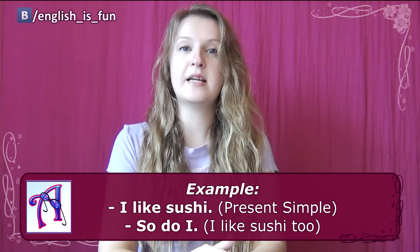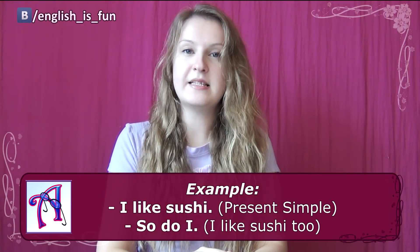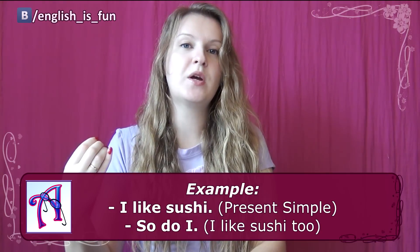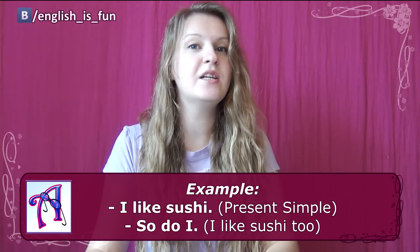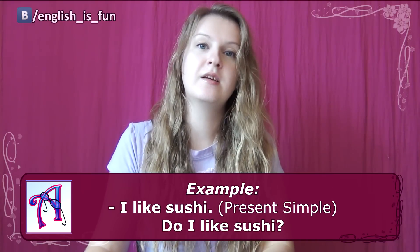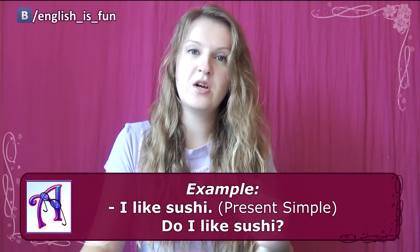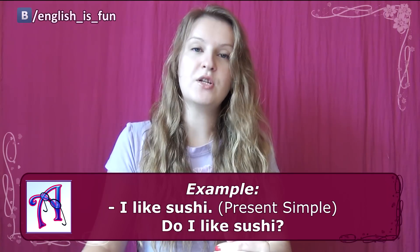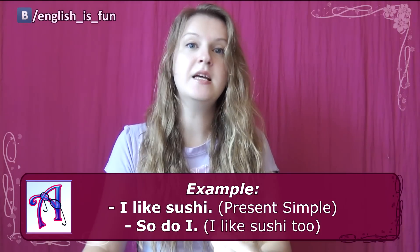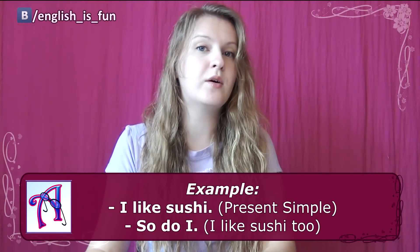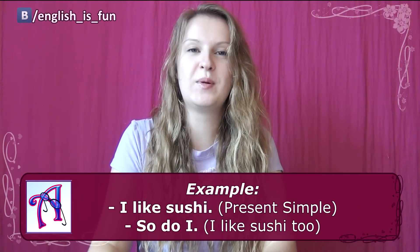Let's look at the sentence you agree to: 'I like sushi.' This is present simple, and the auxiliary verb we are going to use in our answer is connected with present simple. If you formulate a question from this sentence — 'I like sushi' — the question is going to be 'Do I like sushi?' So we use 'do' in our answer and we say 'so do I.'